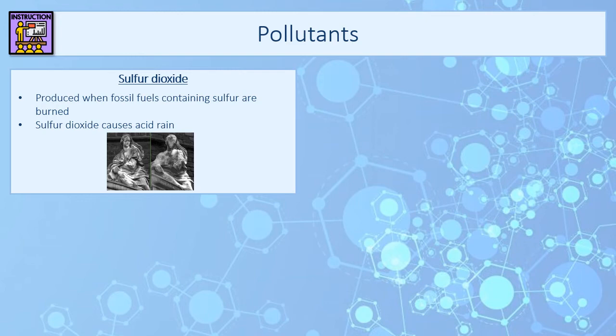Sulfur dioxide causes acid rain, and the problem with acid rain is that it corrodes anything made of limestone or similar material. You can see in this picture the erosion of a statue over a period of time — on the left the original statue with lots of detail, and on the right after acid rain has eroded it away.